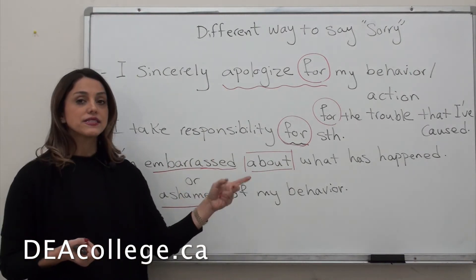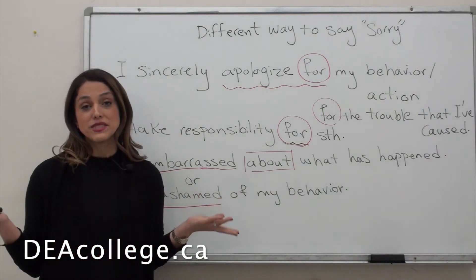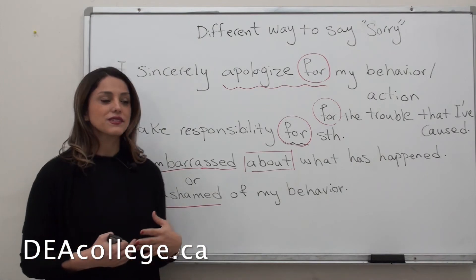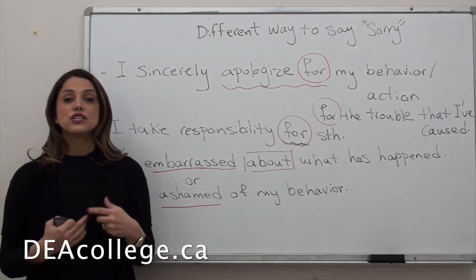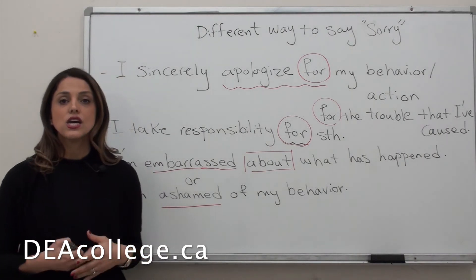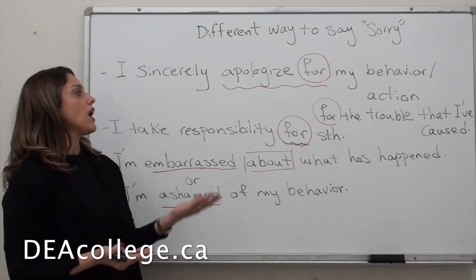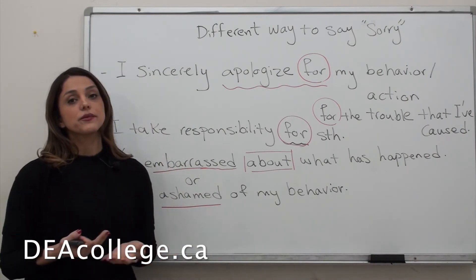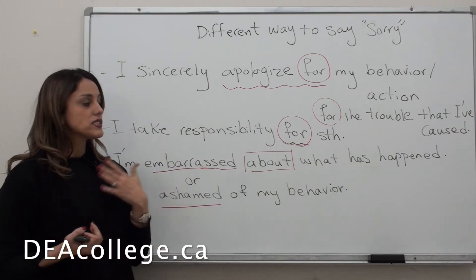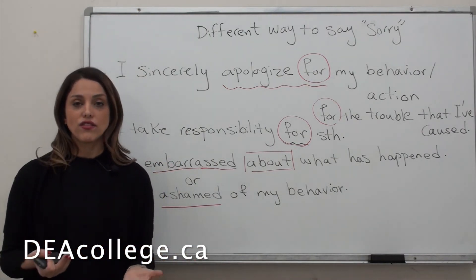Be careful about the preposition you're using. You can say 'I'm embarrassed about what has happened — I missed the test.' Or 'I'm ashamed of my behavior.' So you can email your professor and say 'I sincerely apologize for being late for the test. I take responsibility for my action, for my behavior.'